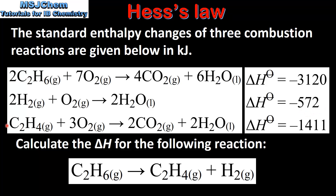In the last equation we have the combustion of one mole of ethane to produce carbon dioxide and water. The enthalpy change for this reaction is negative 1411 kilojoules. Next we'll use the above three reactions to calculate the enthalpy change for the formation of one mole of ethene and one mole of hydrogen from one mole of ethane.